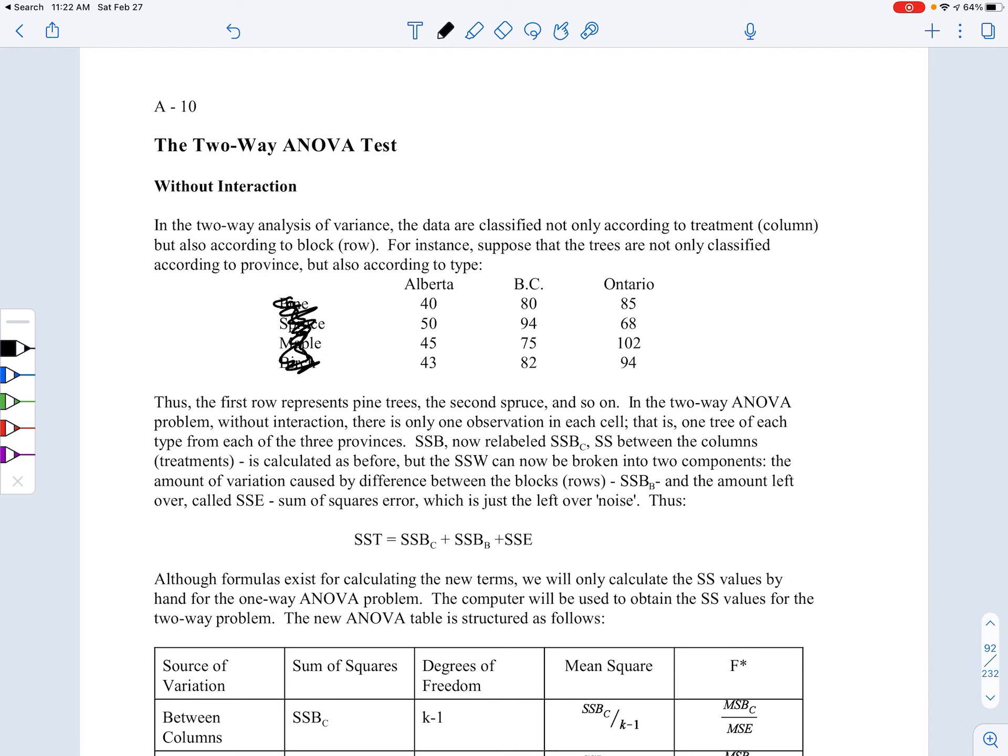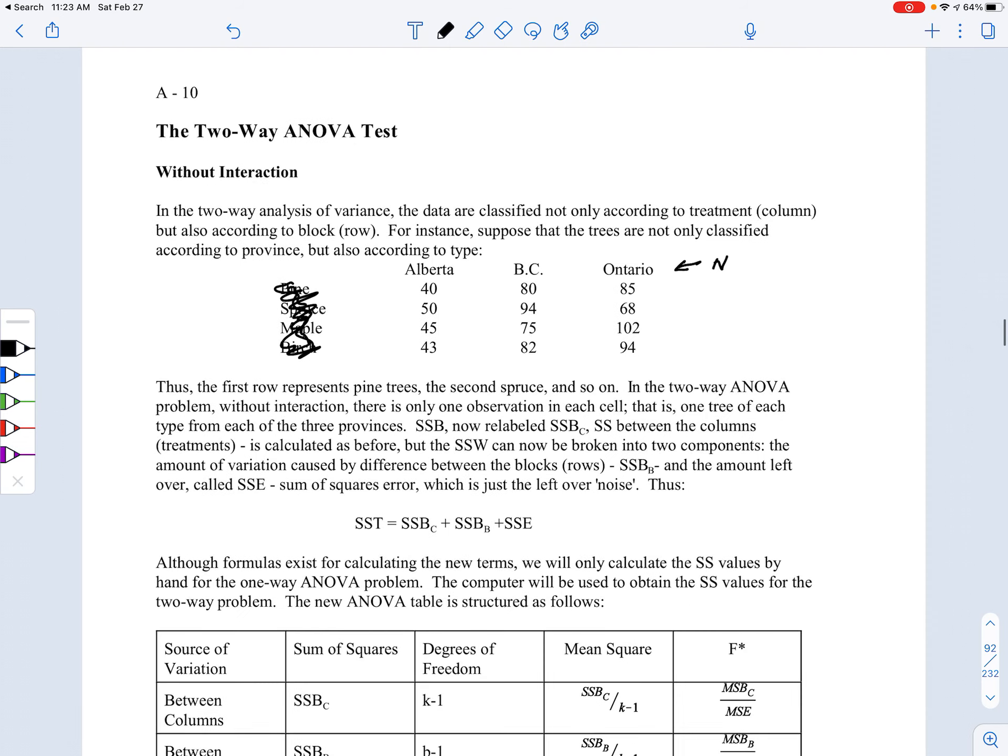This particular problem here was our original trees and heights - provinces and tree heights example. This is the nominal variable where we're taking a look at three provinces, those are the three treatments: Alberta, BC, and Ontario. Then these are the tree heights, that's the interval variable, represented in feet. So we have nominal versus interval, that is a candidate for ANOVA.